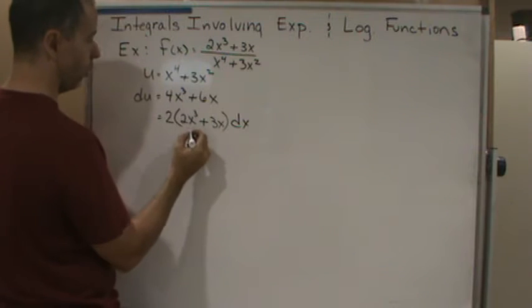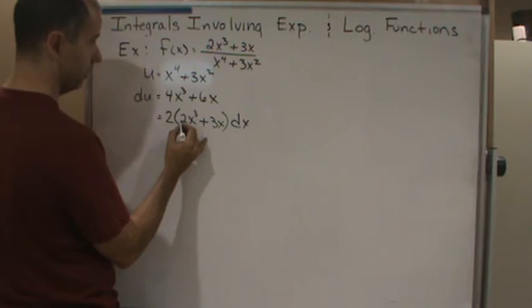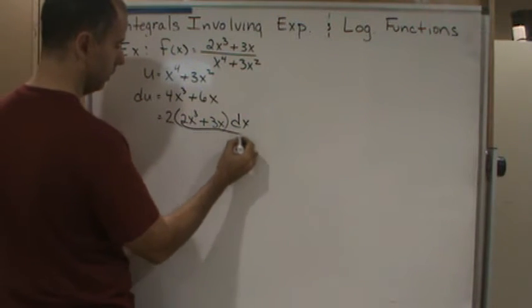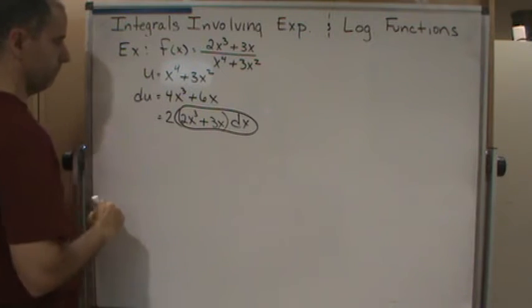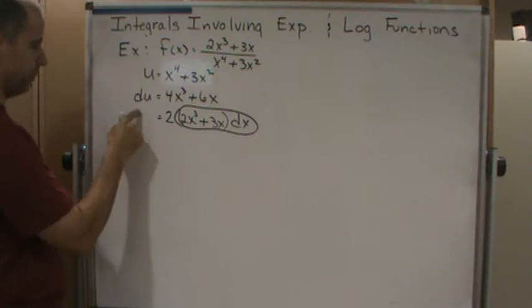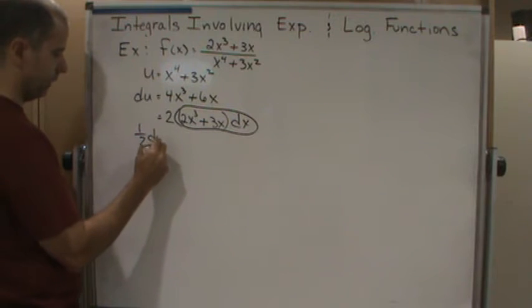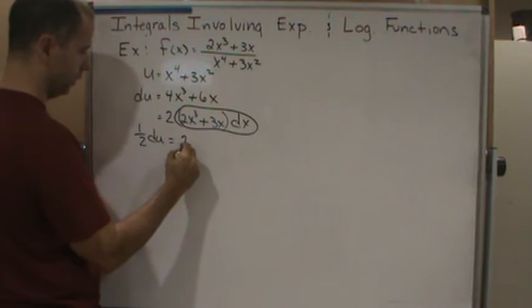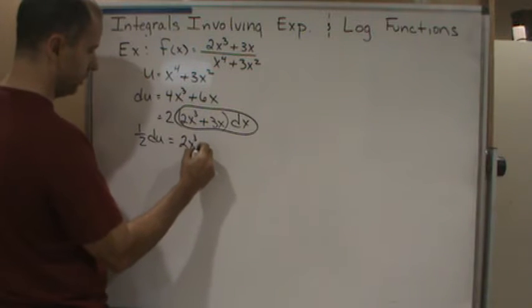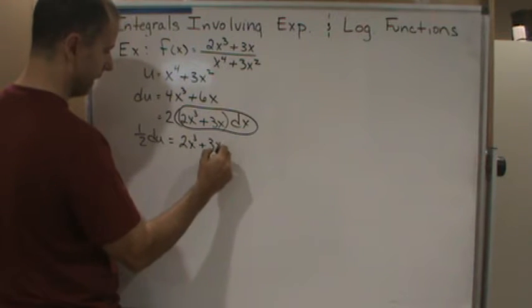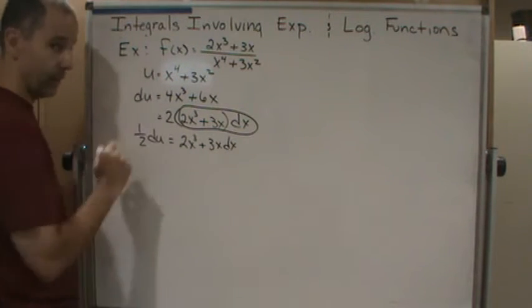dx, so right there. And so if I divide both sides by 2, I get 1 half du equals 2x cubed plus 3x dx. And so now I got it.